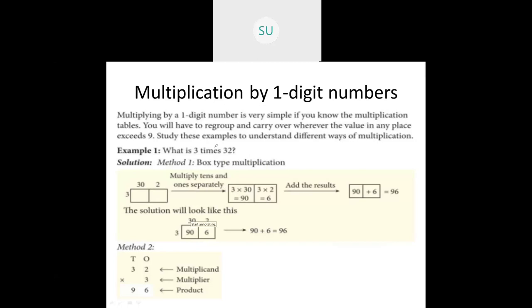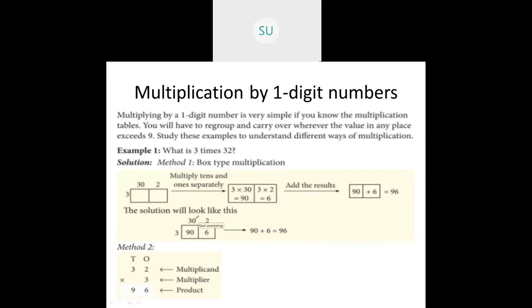Then multiply 3 with 2 — that is 6. Now we have 90 and 6. Add the results: 90 plus 6 is 96. So 32 into 3 is 96. The solution: 3 into 30 is 90, 3 into 2 is 6, so 90 plus 6 is 96.